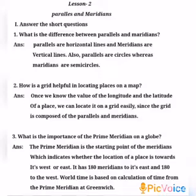Second question: How is the grid helpful in locating places on a map? Answer: Once we know the value of the latitude and longitude of a place, we can locate it easily, since the grid is composed of the parallels and meridians. The grid is therefore helpful in locating places on the map.